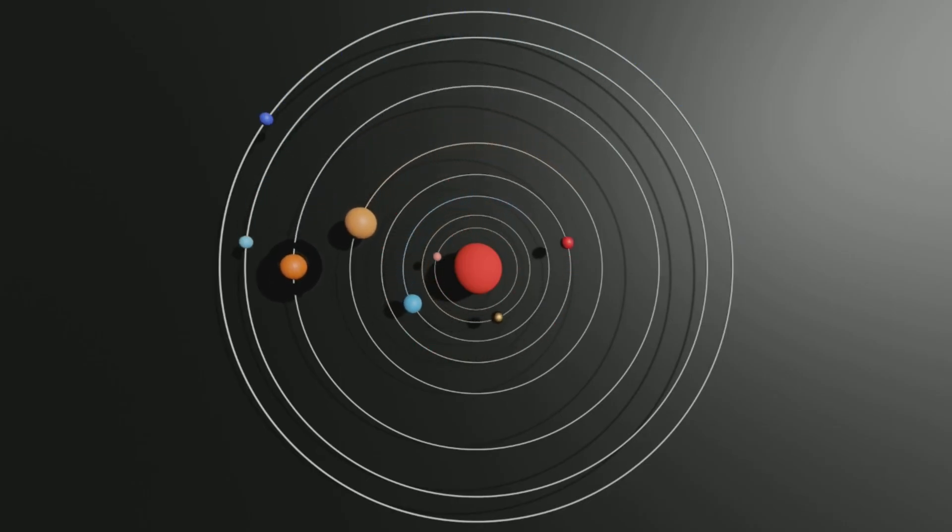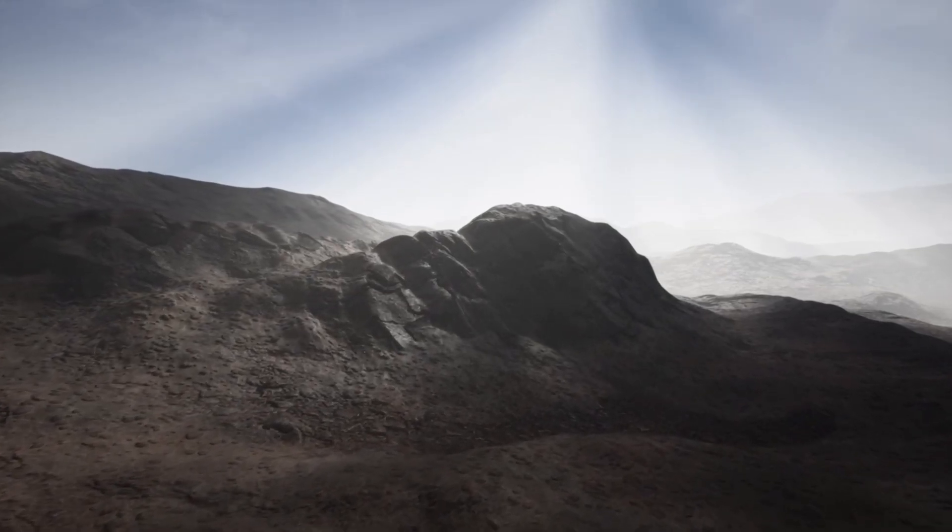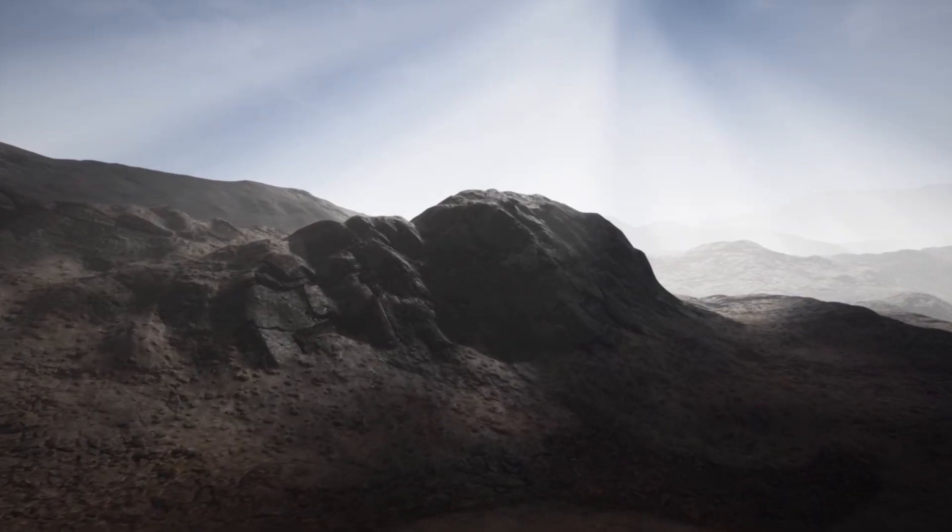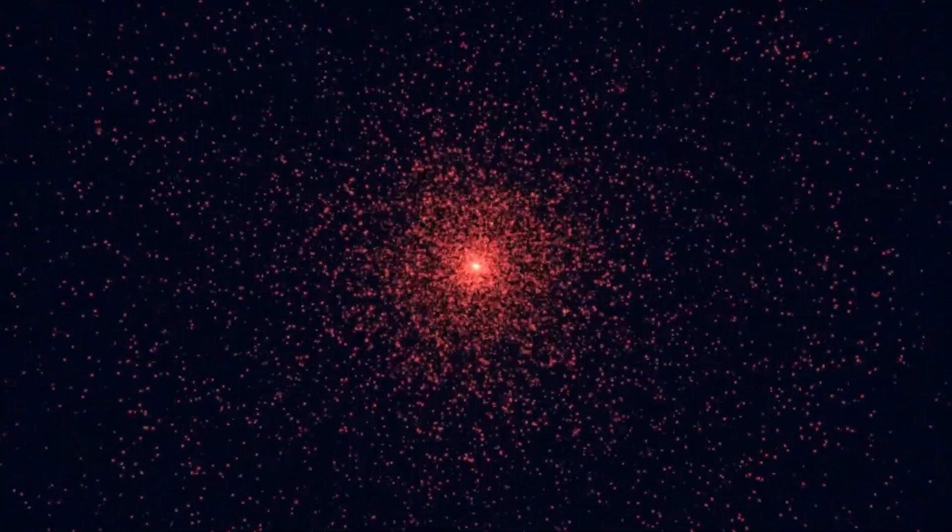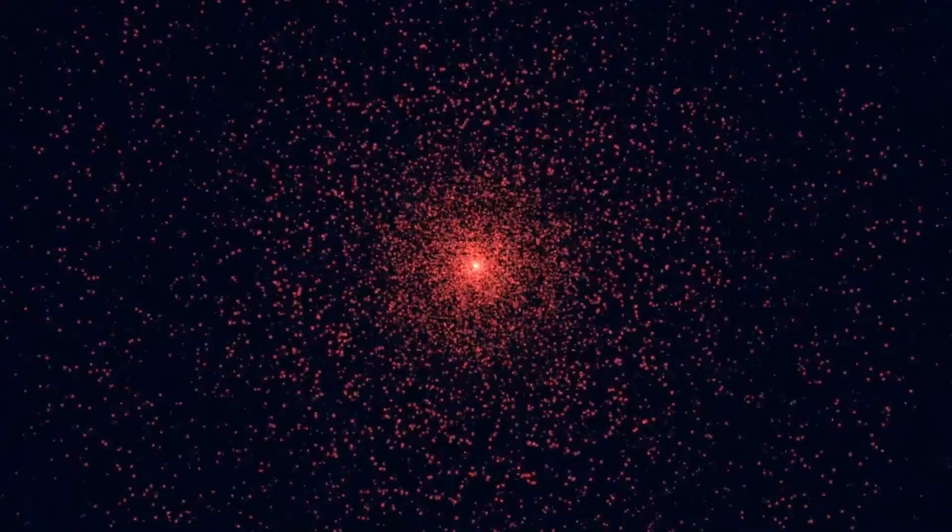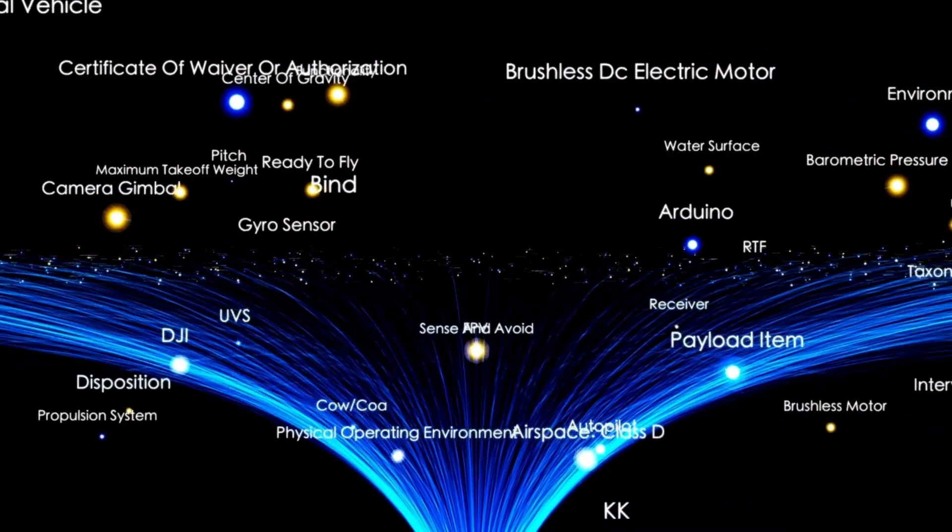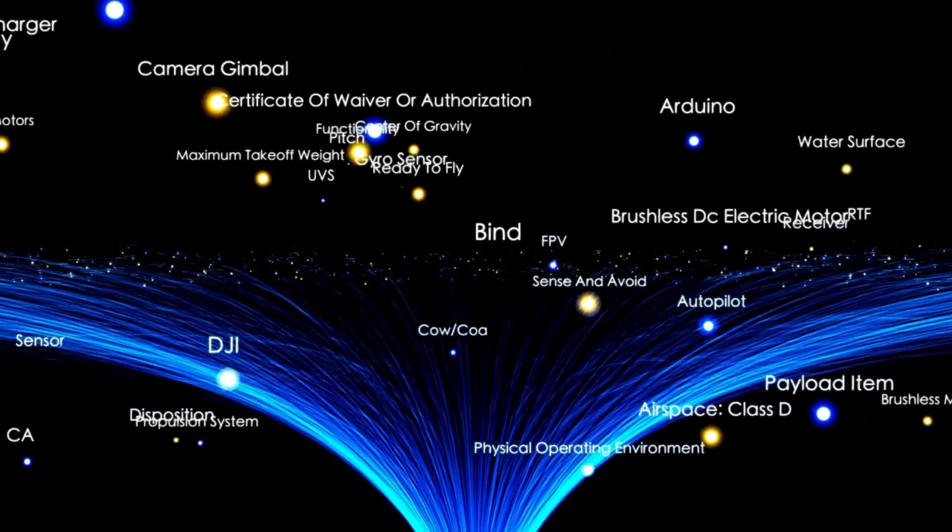Its mass and radius suggest it's a rocky world rather than a gas giant, and its orbit places it within the habitable zone of its cool, dim red dwarf star. But until now, all of this was inferred. We knew its mass from how it pulled on its star. We knew its orbit by how it affected the star's light. But we couldn't actually see it.